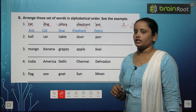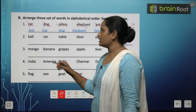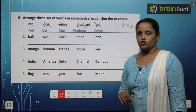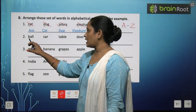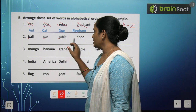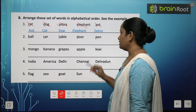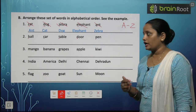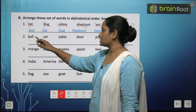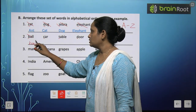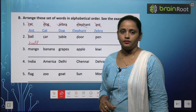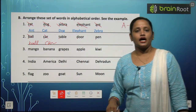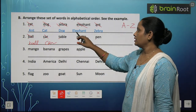Second one is Ball, Car, Table, Door, Pen. Their first letters are B, C, T, D, P. In alphabetical order: first comes B — Ball, next C — Car, then D — Door. Then we count through E, F, G, H, I, J, K, L, M, N, O, P — yes, Pen comes next. And last is T — Table.